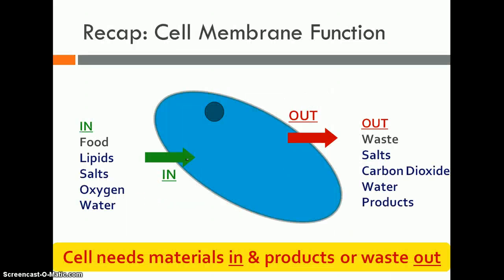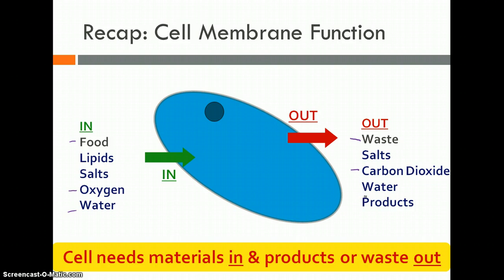Let's recap first. All of our cells — whether we're an animal, a plant, or a bacterium — need to get certain things in and release things out. Those things include food, oxygen, and water getting in and out, waste that cells produce such as CO2, additional water, and products those cells produce that need to be released so other cells can use them. The goal of the cell membrane is to regulate what goes in and out.